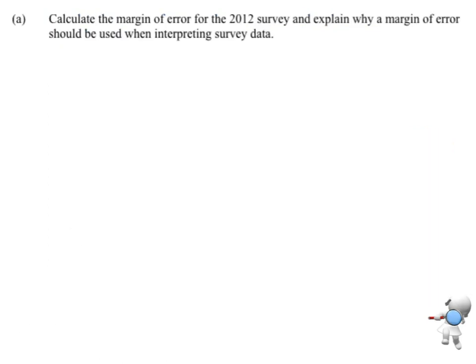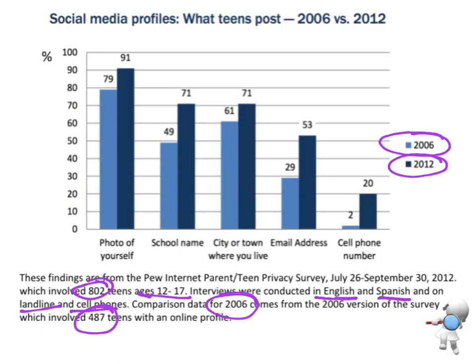Let's have a look at the question. It says calculate the margin of error for the 2012 survey and explain why a margin of error should be used when interpreting survey data. So the first thing we want to do is find our margin of error for 2012. I need to know what was my sample size, going back over here we've got a sample size there of 802.